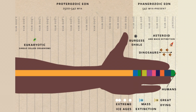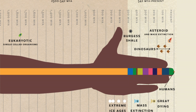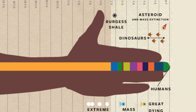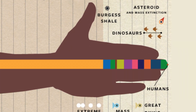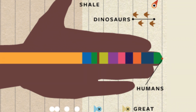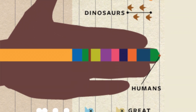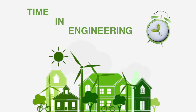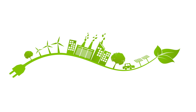Thus, the time of humans is relatively small compared to the time of history. In turn, the latter is small compared to all time. This discussion of time and engineering is relevant because it is closely linked to the issue of sustainability. What should be the time frame of sustainable engineering design?